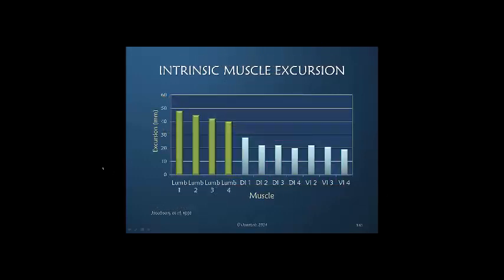Here we're looking at excursion across all four fingers — volar and dorsal interosseous. The excursion of the lumbrical is significantly greater, twice as much as the excursion of any of the interosseous muscles.